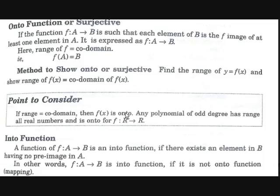Now let's see what is meant by an into function. Onto means surjective, but into is different. A function f: A→B is said to be an into function if there exists an element in B having no preimage in A — meaning there are lone elements in B which are not the image of any element. If a function is not onto, it is into. Simply put, if the range is not equal to the codomain, the function is into. So if a function is onto, it is not into, and if it is not onto, it is into.